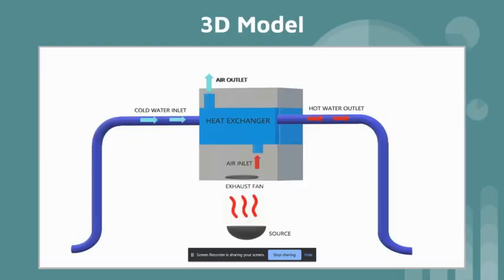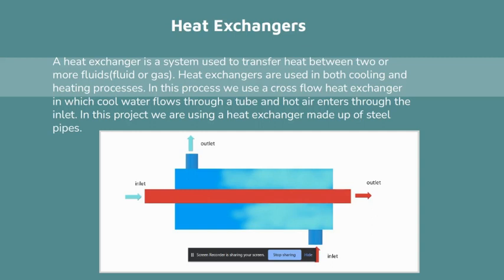As we have discussed in the previous slide, we are using a heat exchanger for transferring the heat from the hot air to the cold water which is coming from the inlet. So basically, a heat exchanger is a system which is used to transfer heat between two or more fluids, fluid or gas. Heat exchangers are used in both cooling and heating processes. In this process, we are using a cross-flow heat exchanger in which cool water flows through the tube and hot air enters through the inlet. In this project, we are using a heat exchanger which is made up of steel pipes.